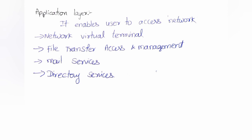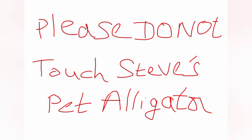To remember all the layers of the OSI model, use this trick: 'Please Do Not Touch Steve's Pet Alligator' — where P stands for physical layer, D for data link layer, N for network layer, T for transport layer, S for session layer, P for presentation layer, and A for application layer. Thanks for watching — please like, share, and subscribe to my channel.